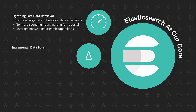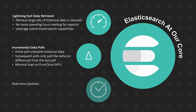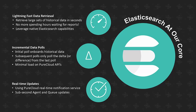Another thing that Emite does is incremental data polls. After the initial poll at the start, we only poll the difference from the last set of data, which means we have a very minimal load on PureCloud itself. And we receive real-time updates from PureCloud's notification service, giving us sub-second agent and queue data written straight to the dashboards and also to Elasticsearch.